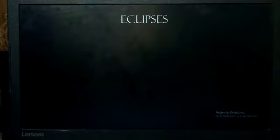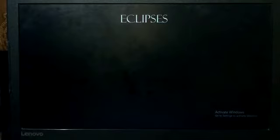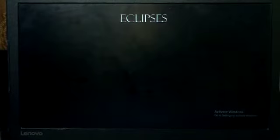So, there are two types of eclipses. One is solar eclipse and second is lunar eclipse. Now, let's see these eclipses one by one in detail.